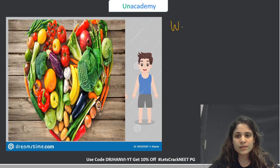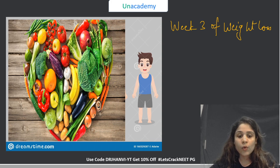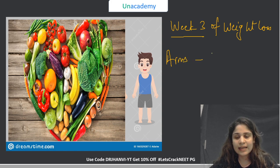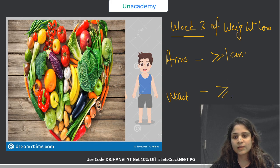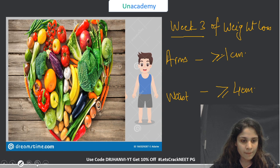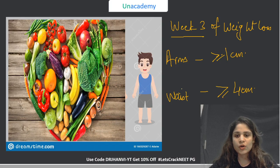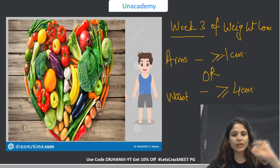In week 3 of his weight loss, he decides to also eat healthy food — not just exercise, but accelerate faster. All the burgers and pizzas are out and all the veggies and fruits are in. At the end of week 3, when he checks his arms, he sees there is more than 1 cm loss. And when he checks his waist, he sees there is more than 4 cm loss. He is checking only one of them — that is why we write OR.